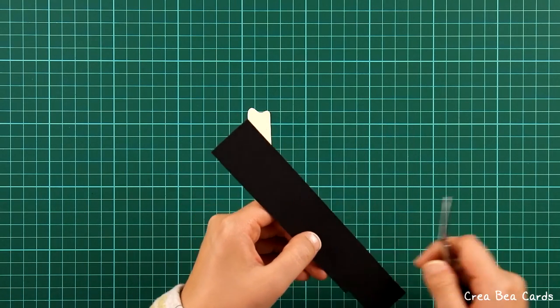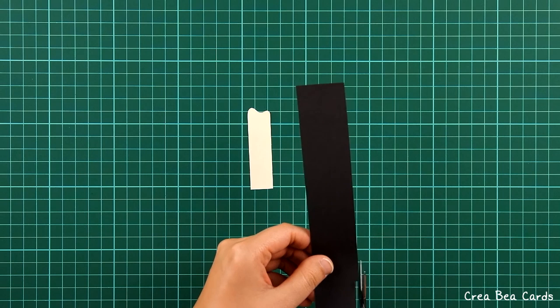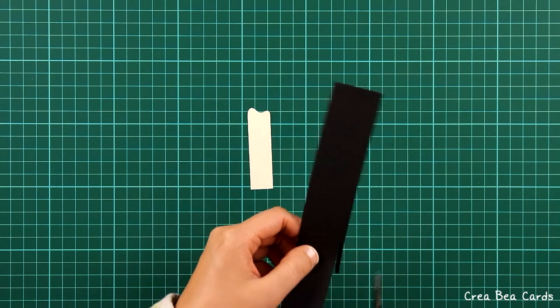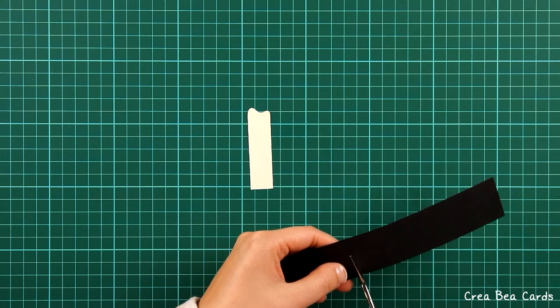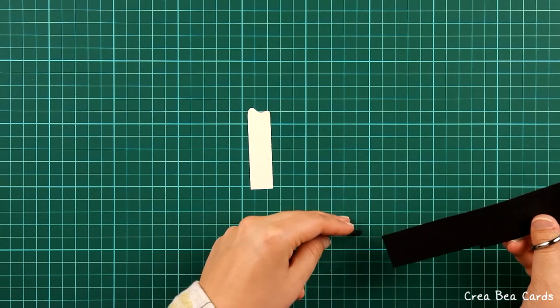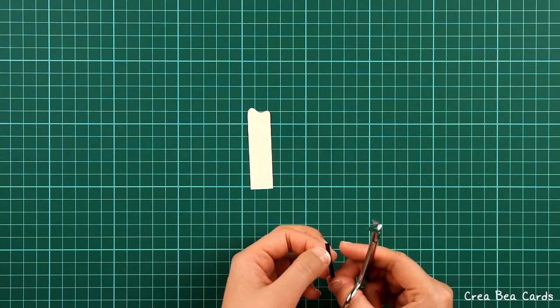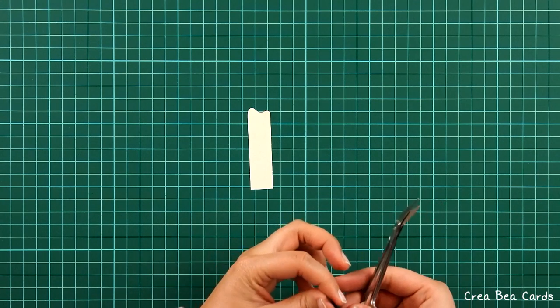Then cut out a candle wick from black paper. The top should be slightly smaller. You can cut it like a triangle.